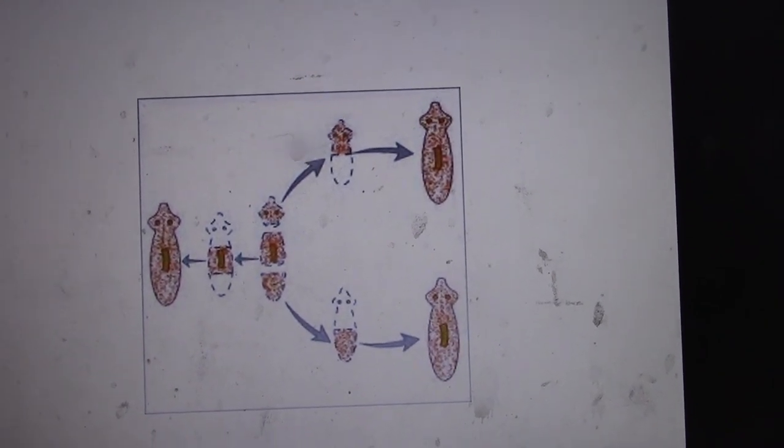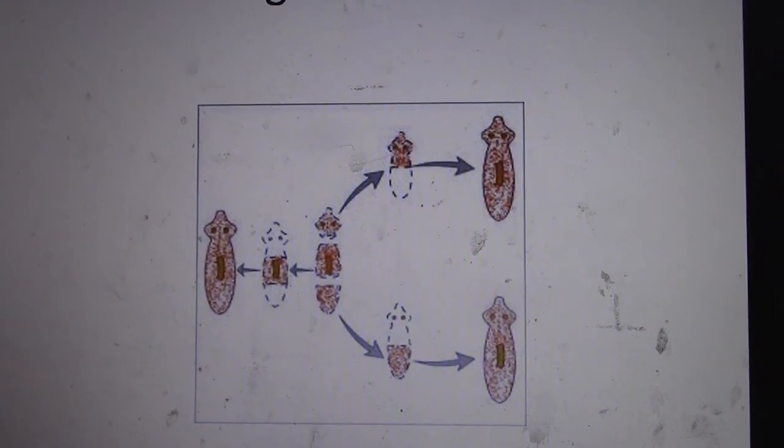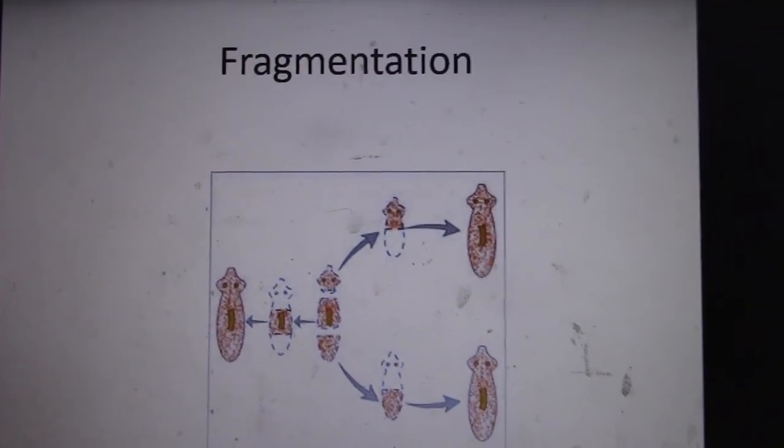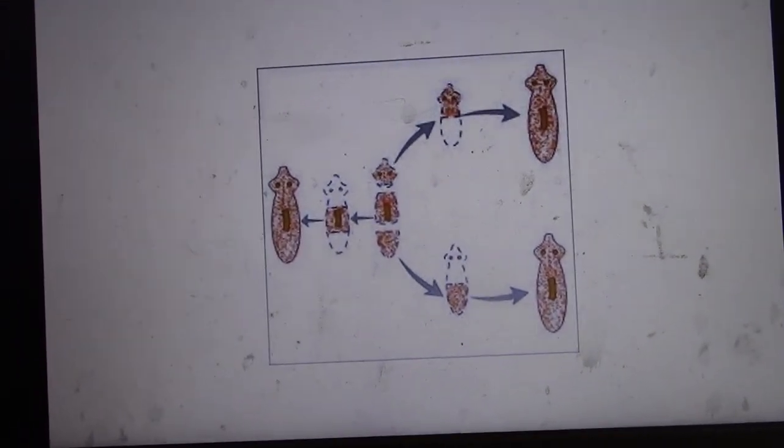So if I cut you in half and you grew into two yous, that would be how that would work. That is super freaky. That is an asexual strategy for eukaryotic cells as well.